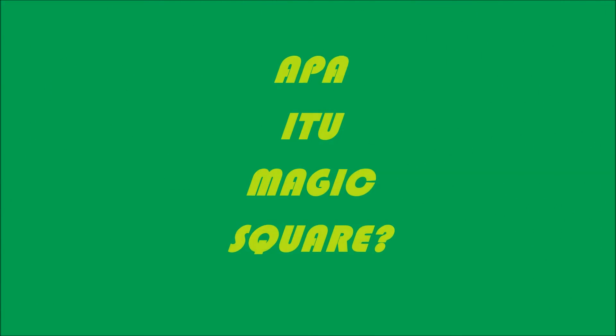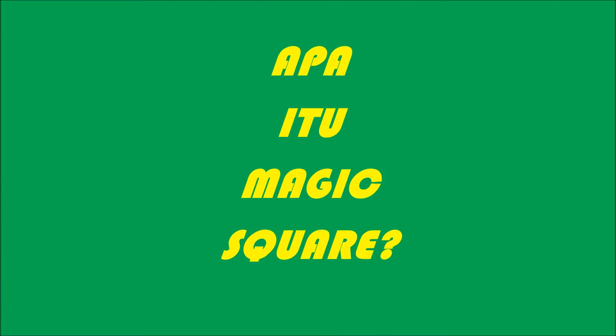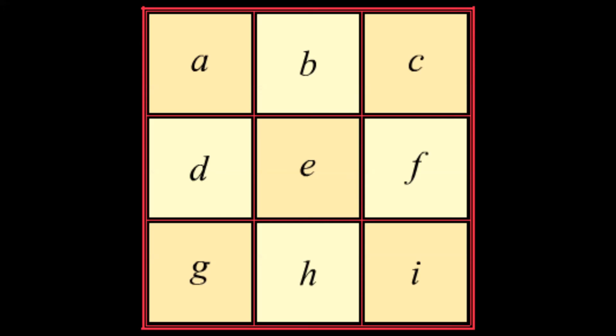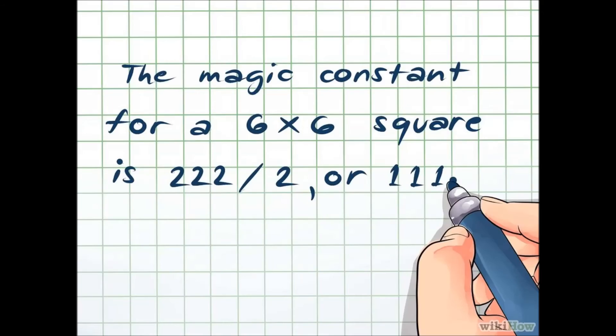What is a magic square? Magic square or persegi ajaib is a persegi with a size of n×n, where each row, column, and diagonal has the same sum.